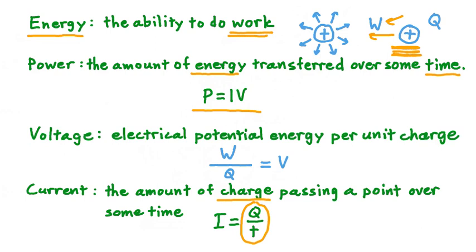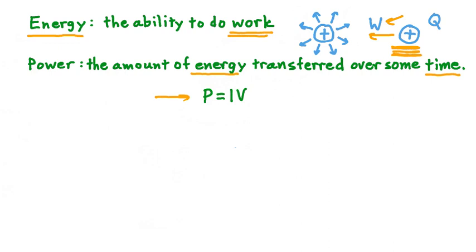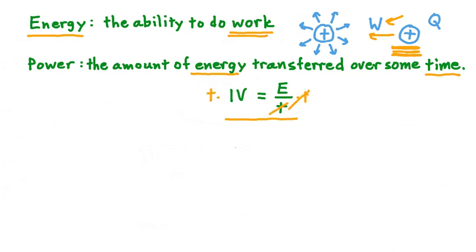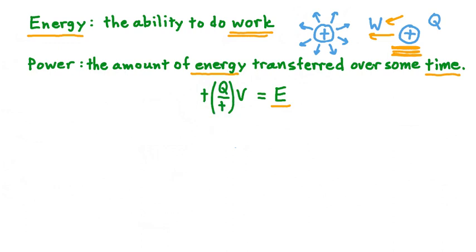There are a couple of helpful things to notice about this equation. First, according to our definition for power, power is equal to some amount of energy transferred over some amount of time. That means energy divided by time equals current times voltage. If we then multiply both sides by time, that term cancels and we have an equation that says energy is equal to time times current times voltage. Substituting Q divided by T in for I, the factor of time cancels out, and we have that energy is equal to charge multiplied by voltage.